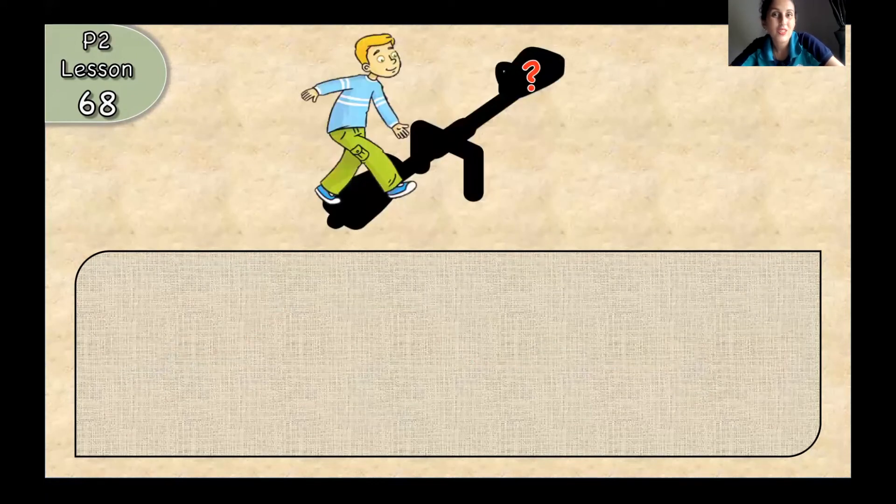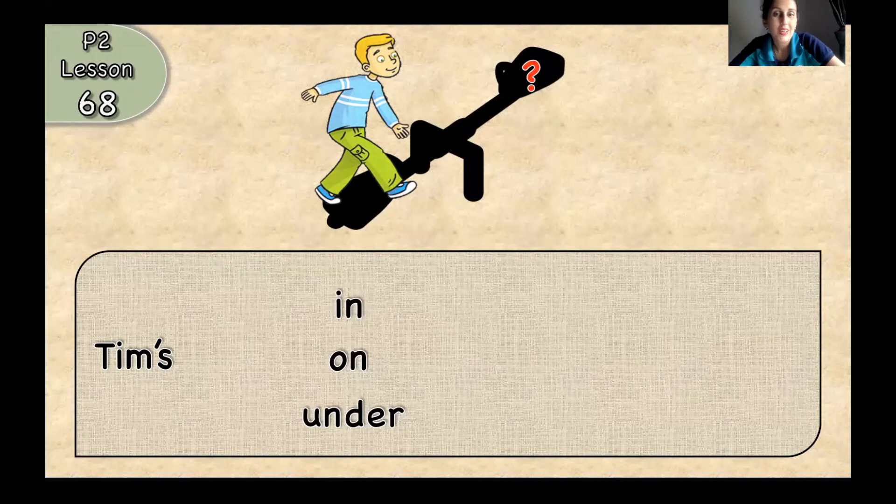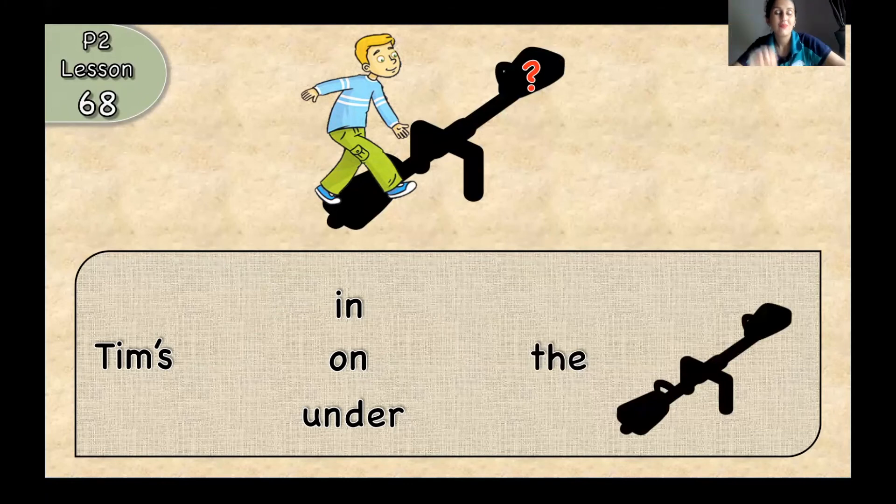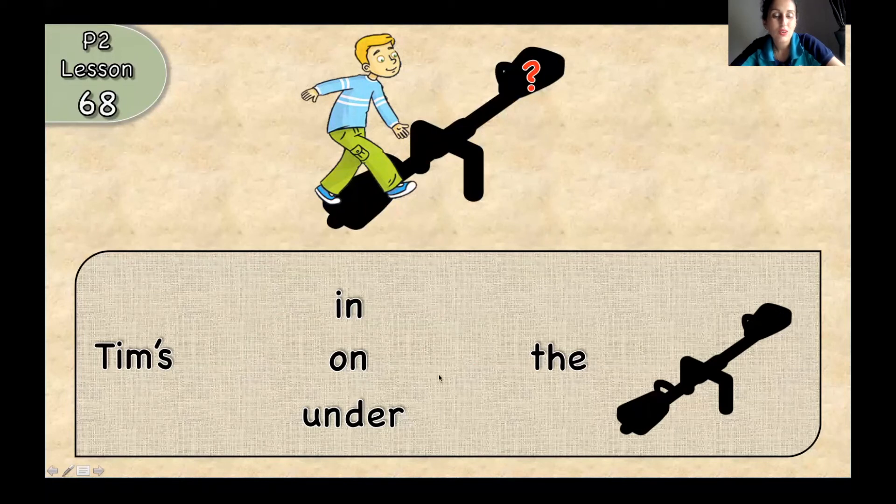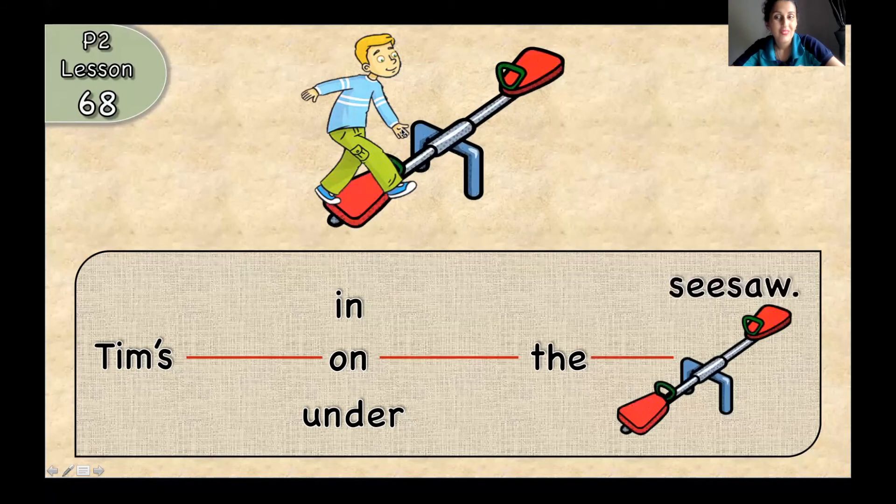Let's have a look at the picture. This is Team. And can you tell me where is Team? Team's in, on, under, the, beep. Can you recognize this playground attraction? And can you choose one preposition? Team's on the seesaw. Very good.